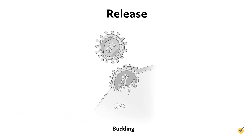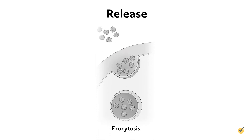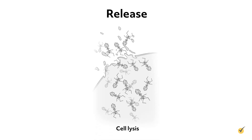The first mechanism is budding, during which the virions take parts of the host cell's plasma membrane with them, forming the envelope that is common to many viruses. With budding, each viral particle is released individually. The second mechanism is exocytosis, which is essentially the reverse of endocytosis. A vesicle containing a number of virions forms within the host cell, merges with the plasma membrane, and opens to release multiple virions. The third mechanism is cell lysis. The virions disrupt the host cell's plasma membrane, resulting in release of the virions and death of the host cell. Once released from the host cell, the virions go on to infect other host cells, and the process continues.